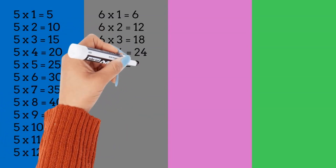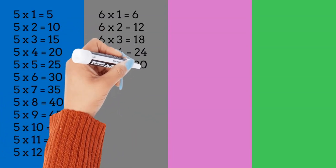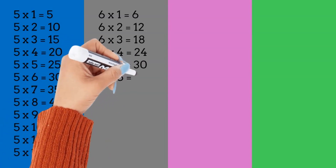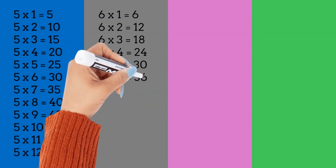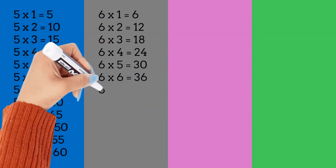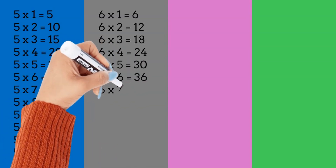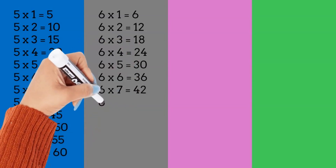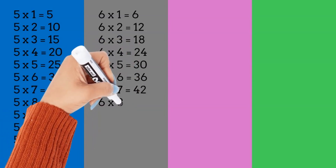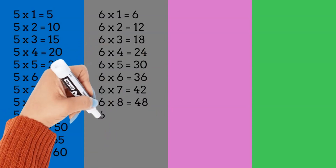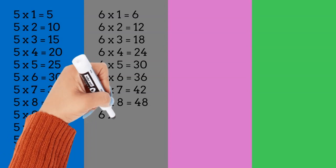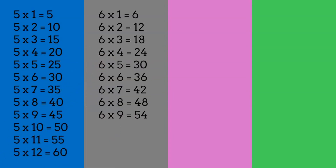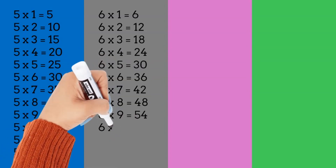6 times 5 is equal to 30. 6 times 6 is equal to 36. 6 times 7 is equal to 42. 6 times 8 is equal to 48. 6 times 9 is equal to 54.